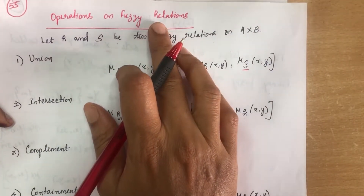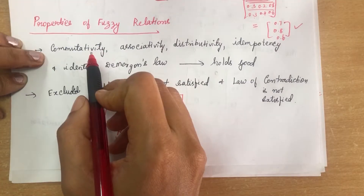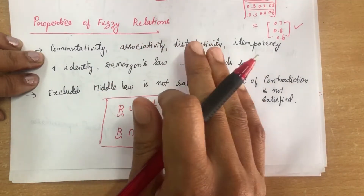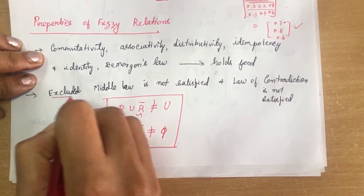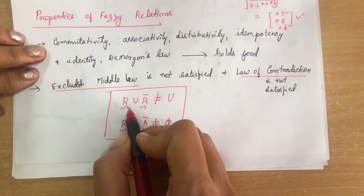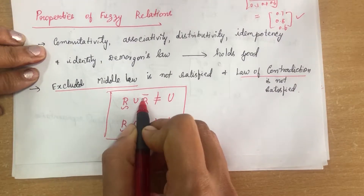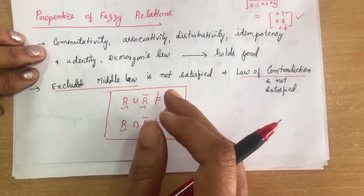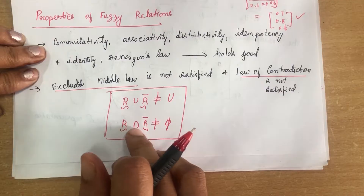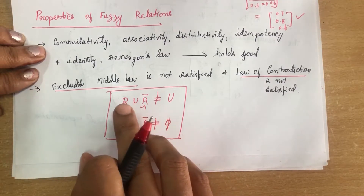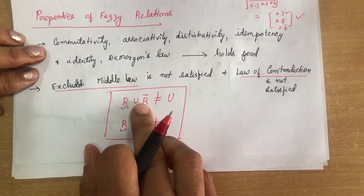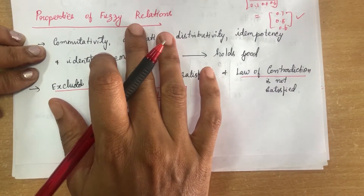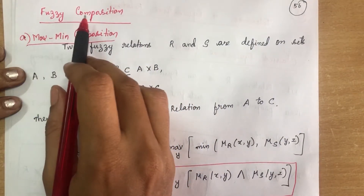Coming to the properties of fuzzy relations: commutativity, associativity, distributivity, idempotency, identity, and De Morgan's law all hold for fuzzy relations, except for two: the excluded middle law and the law of contradiction. The excluded middle law states that R ∪ R̄ should give a universal set, but it does not. Likewise, R ∩ R̄ should give an empty set, but it does not. All other laws are satisfied.